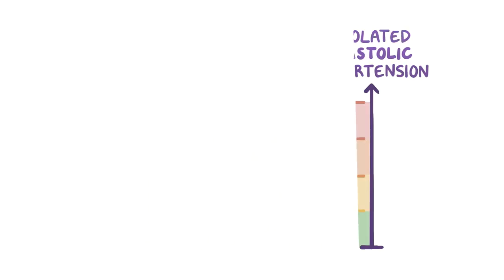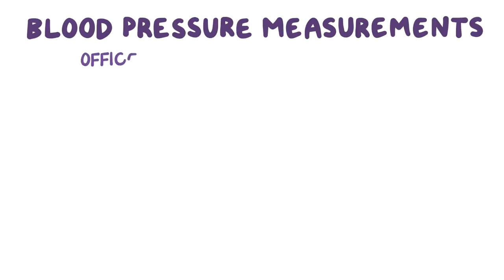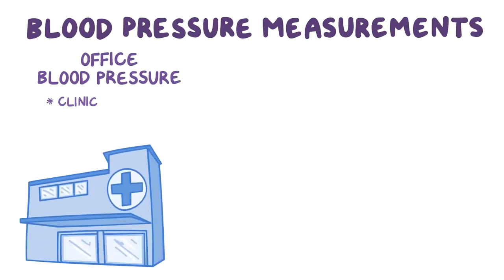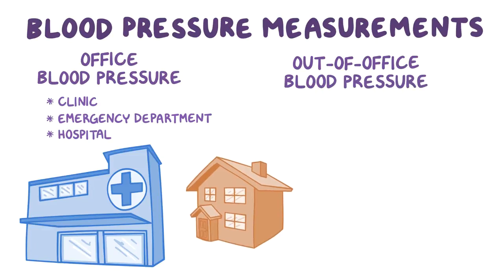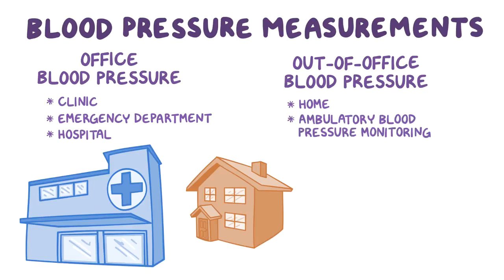There are two main types of blood pressure measurements. Office blood pressure, which is taken in a clinic, emergency department or hospital, and out-of-office blood pressure. The out-of-office blood pressure is either a home blood pressure, taken by the patient at home, or an ambulatory blood pressure monitoring, or ABPM, which involves 24-hour monitoring of blood pressure as the patient lives their normal daily life and while they sleep, to see if their blood pressure falls at night compared to during the day.